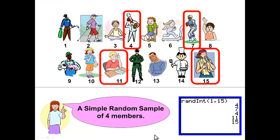Remember it is a simple random sample because each sample size of four is possible from this group of 15 and has an equal chance of being selected.